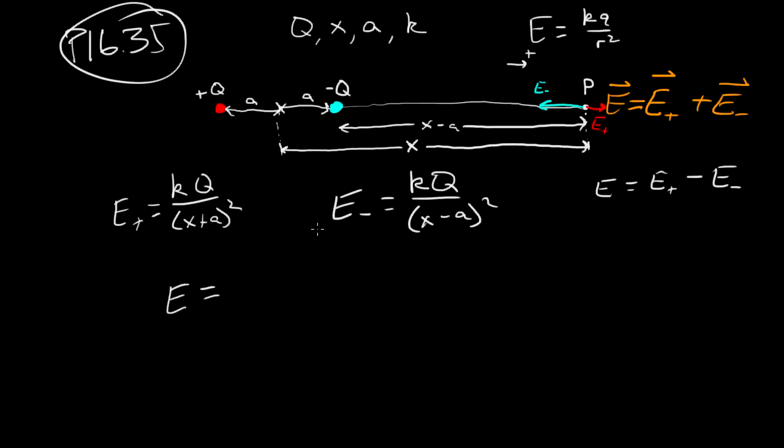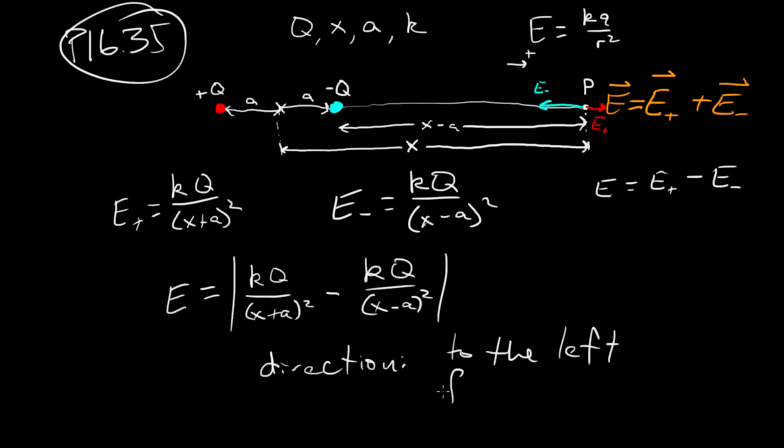So E equals, now I can put absolute value signs here because I know this is actually going to give me a negative number, but it's KQ over X plus A, the quantity squared, minus KQ over X minus A, the quantity squared, and the direction is to the left for A less than X.